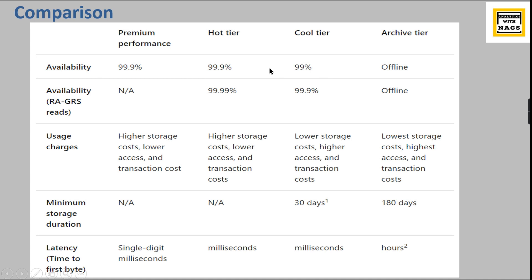Here is a comparison between all three options. Availability: Hot tier is 99.9% available, Cool tier is 99% available, and Archive tier is completely offline — once you set Archive it goes offline, and when you initiate retrieval it takes some time. Geo-redundancy is available for Hot and Cool. For usage charges: Hot has higher storage cost but lower access and transaction cost; Cool has lower storage cost but higher access and transaction cost; Archive has the lowest storage cost but the highest access cost.